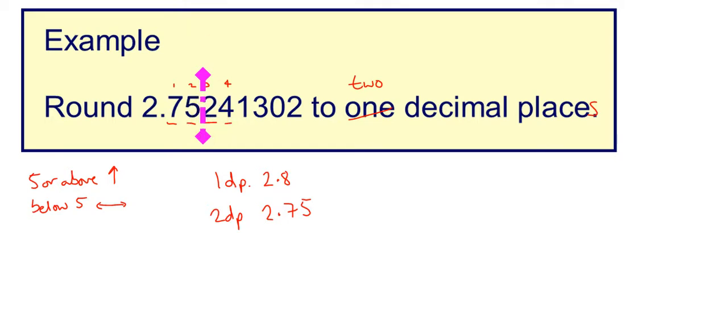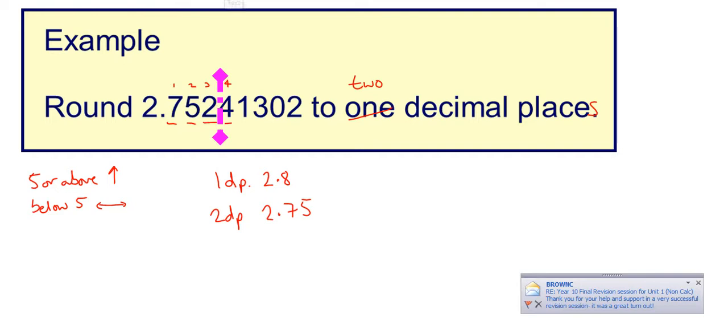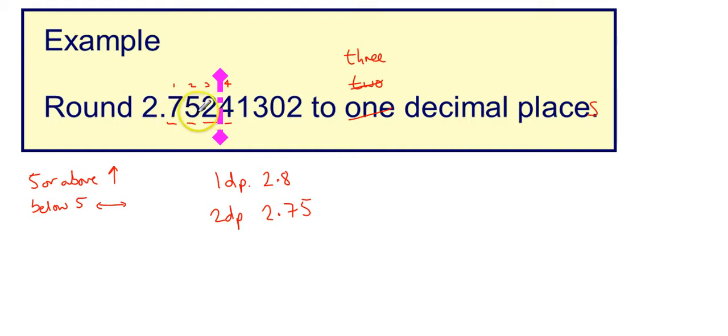And then if I wanted to go to 3 decimal places, I would need the 7.52. In this case, I check the 4. That's below 5, and so that one, 3 decimal places, is going to stay 2.752.